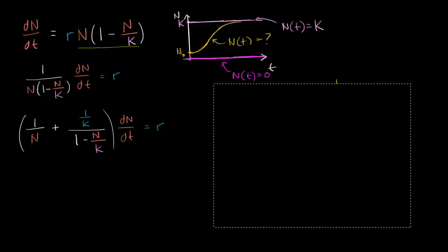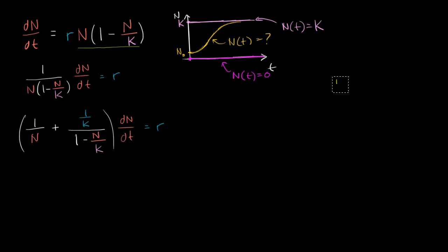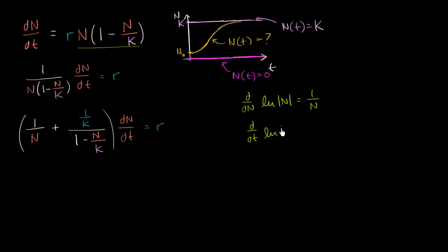How does this help us? Well, you probably recognize that the antiderivative of 1 over n is the natural log of the absolute value of n — and the derivative of that with respect to n is 1 over n. If we take the derivative of the natural log of the absolute value of n with respect to t, by the chain rule, that equals (1 over n) times dn/dt. That's exactly the first term we have. So the chain rule connects our expression to recognizable antiderivatives.